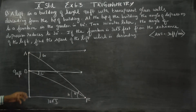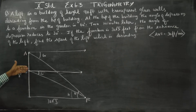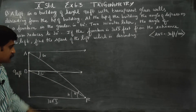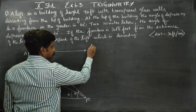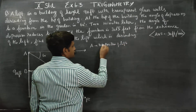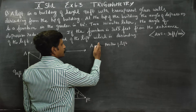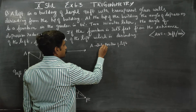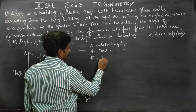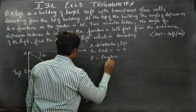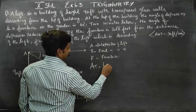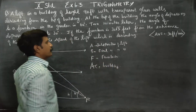Find the speed of the lift. The fountain is 30 root 3 feet from the entrance. The top position of the lift is the initial position — label it A. B is the final position of the lift. F is for fountain. AC is the building.